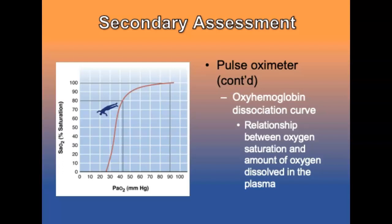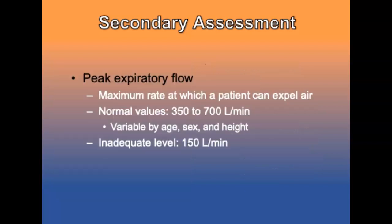End-tidal carbon dioxide monitoring and waveform capnography are discussed in detail in Chapter 15. The peak expiratory flow meter measures the maximum flow rate at which the patient can expel air from the lungs. Normal peak flow values are between 350 and 700 liters per minute. A peak flow less than 150 liters per minute is an inadequate level and signals significant distress.